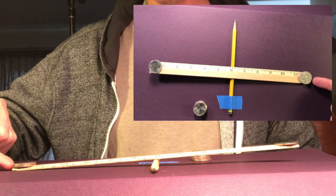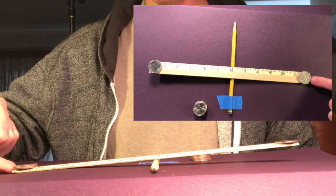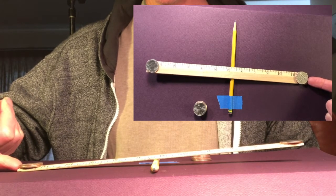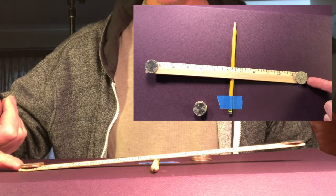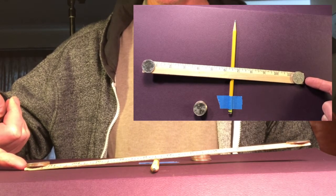I'm going to actually move the ruler and see if we can get it to balance with two quarters on one side and one quarter on the other.